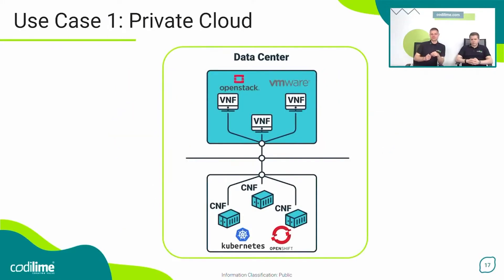The first use case: a private cloud with an OpenStack cluster, or for enterprise an VMware cluster, connected with containerized services in Kubernetes or OpenShift. Using just the SDN controller configuration, you may allow communication and specify all the rules between virtual machines, virtualized services, and containerized services. It's as easy as it seems.